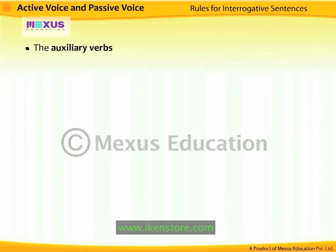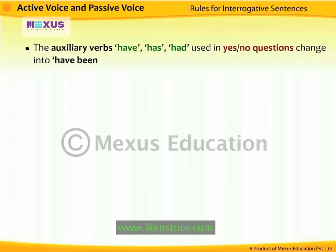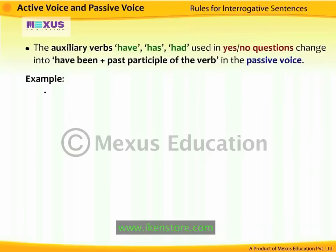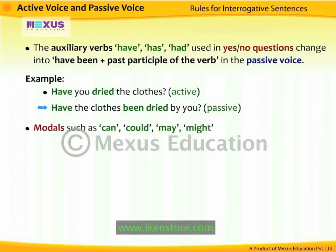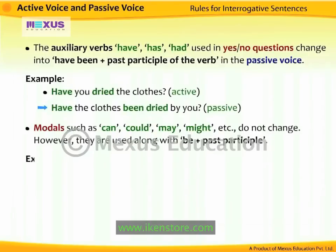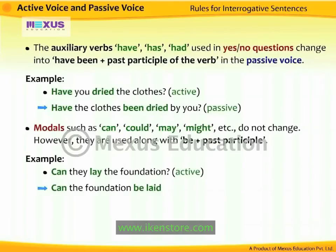The auxiliary verbs have, has, had used in yes/no questions change into 'have been + past participle' in passive voice. For example, 'Have you dried the clothes?' becomes 'Have the clothes been dried by you?' Modals such as can, could, may, might, etc. do not change; however, they are used along with 'be + past participle.' For example, 'Can they lay the foundation?' becomes 'Can the foundation be laid by them?'